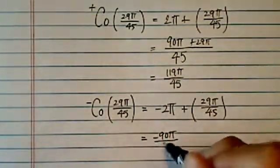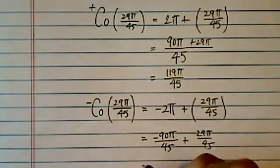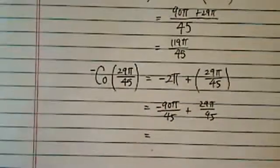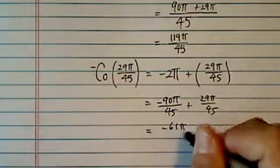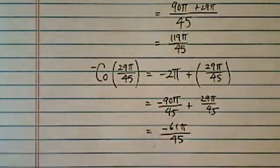Minus 90π over 45, plus 29π over 45. Add it together, that's all you have to do, and it's minus 61π over 45. That's the negative coterminal angle.